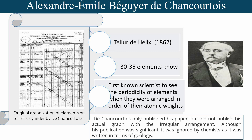This precursor to the modern periodic table foreshadowed the organization later refined by Mendeleev and others. However, de Chancourtois only published his paper but did not publish his actual graph with the arrangement. Although his publication was significant, it was largely ignored by chemists as it was written in the context of geology.